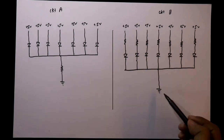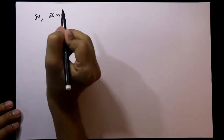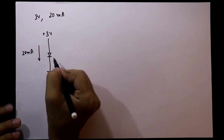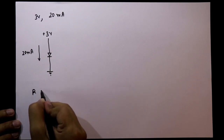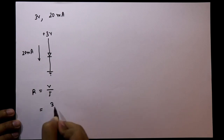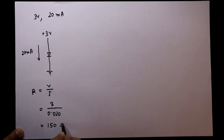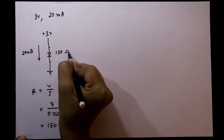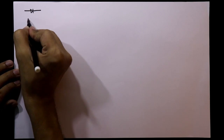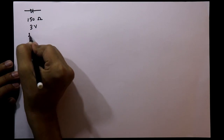Now we have to find out whether this circuit is correct or this one. In a normal condition, current through the LED is 20 milliamperes at 3 volts. The internal resistance of the LED is R = V/I = 3 divided by 20 milliamperes, which equals 150 ohms. So the internal resistance of this LED is 150 ohms — it glows at 3 volts with 20 milliamperes.